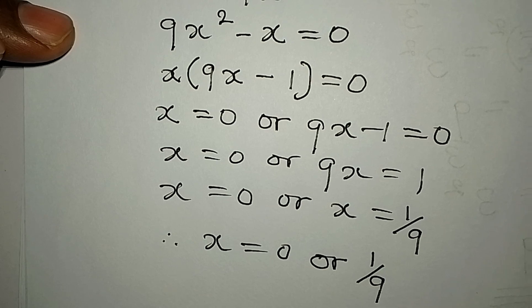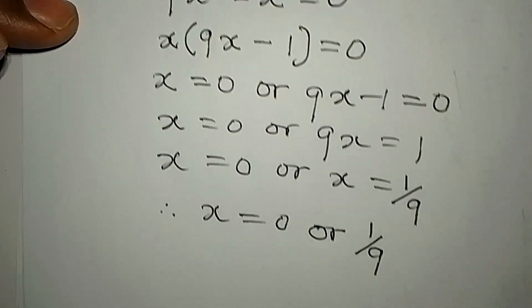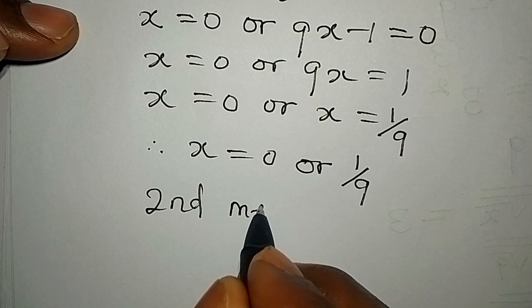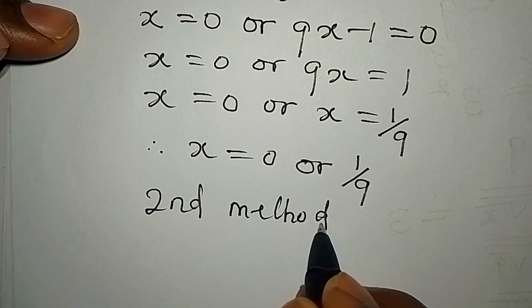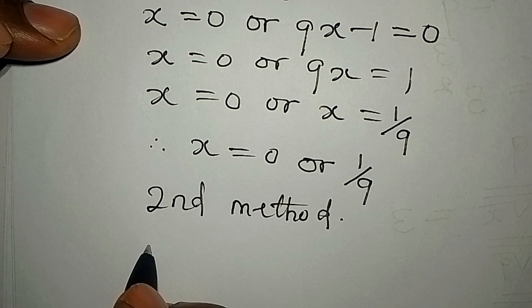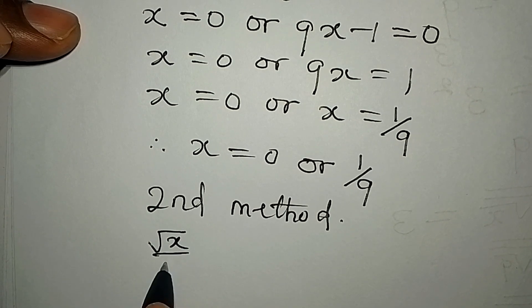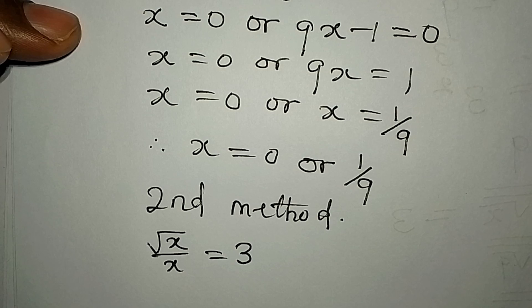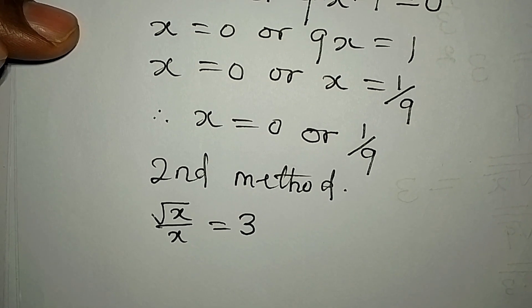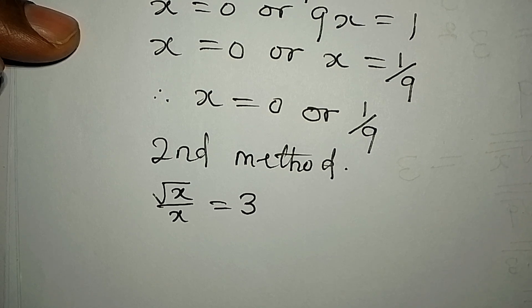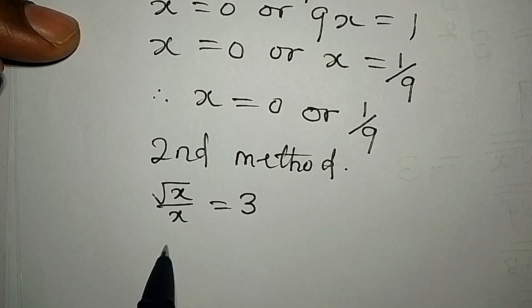Let's go straight to the second method. The equation is square root of x over x equals 3. The one we did before we cross multiplied, but this time around we will not cross multiply.